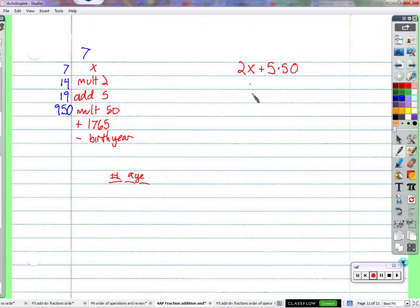Let's try it for 7, okay? We're going to put 7 in the place of x. 2 times 7 plus 5 times 50. But here's the thing I'm going to do. I'm going to follow exactly what's written here. Okay? So 2 times 7 is 14.